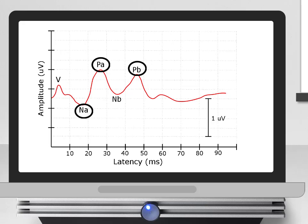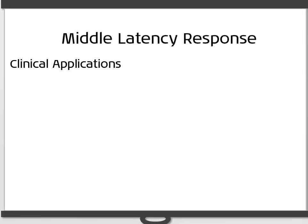A second complex of NB and PB can also be recorded, but is of less clinical value in threshold testing, and of use for in-depth anesthesia testing. In children, the waveform morphology changes with age and is attributed to the maturation of the MLR generators. The MLR is a useful test which can be used in conjunction with ABR to provide insight into the subcortical and cortical function of a person's auditory system.